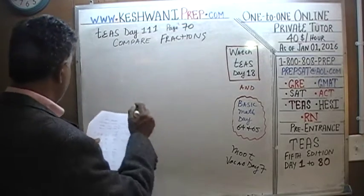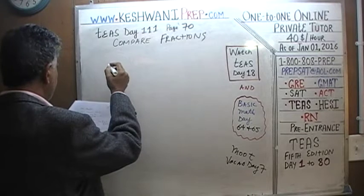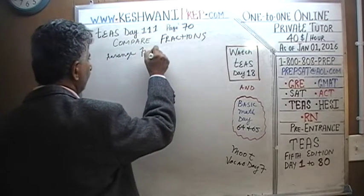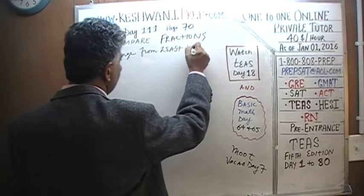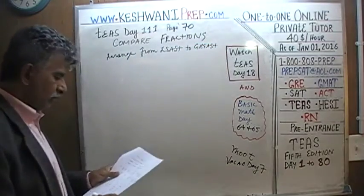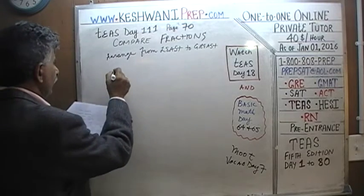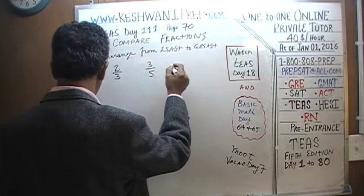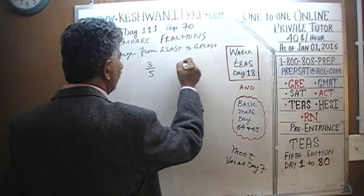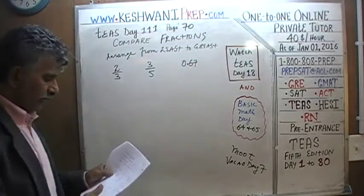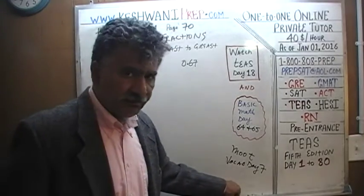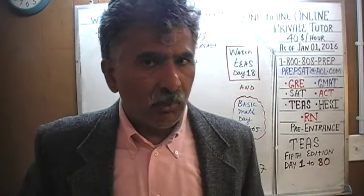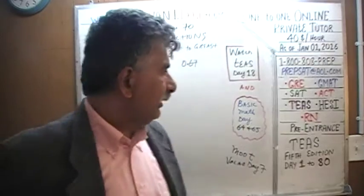Let's take a look at the very first problem. We are being asked to arrange the given quantities from least to greatest. We have 2/3, we have 3/5, and we have 0.67. First thing first: we have to decide whether we want to convert everything to decimal or everything into fraction. We cannot compare them if they are in different forms.